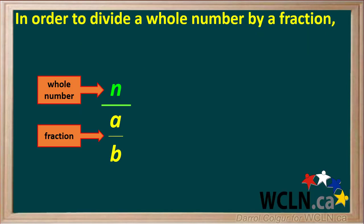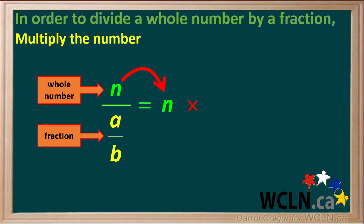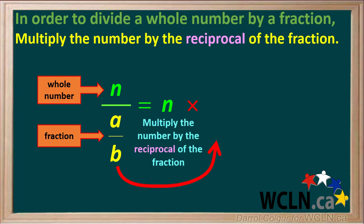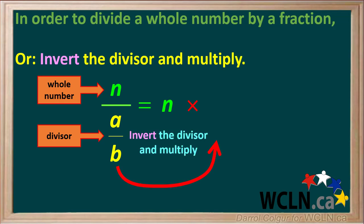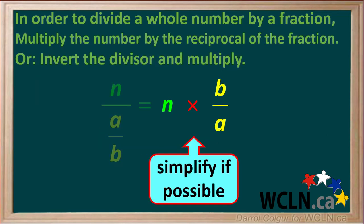Let's summarize what we've learned. In order to divide a whole number n by a fraction a over b, we multiply the numerator n by the reciprocal of the fraction, which is b over a. Another way of saying what we need to do is invert the divisor a over b and multiply to give us n times b over a. Once we have our two numbers to multiply, we can simplify them if possible before we multiply them.